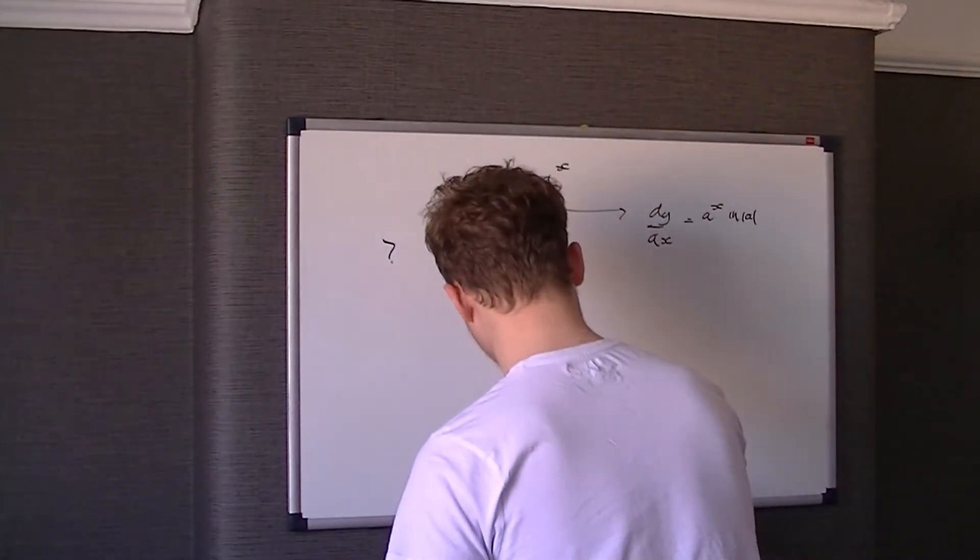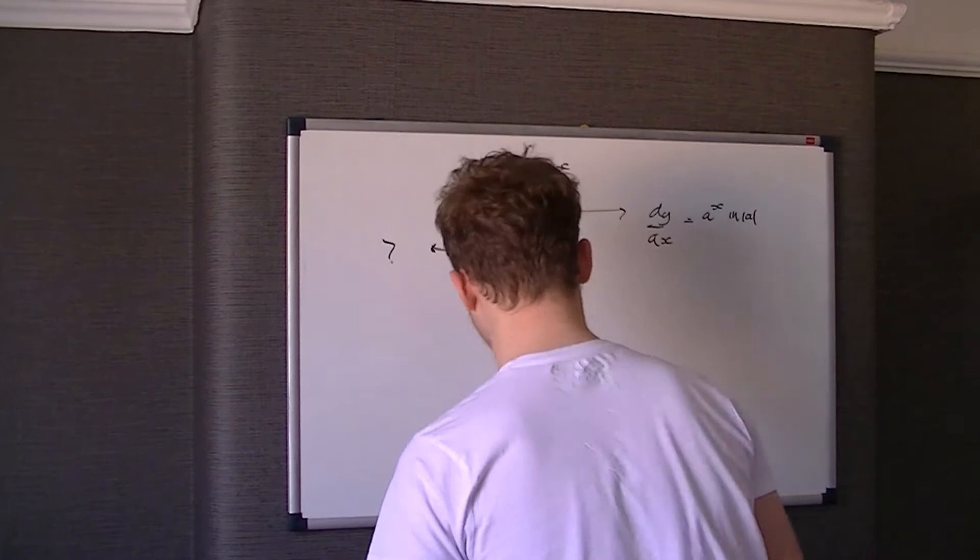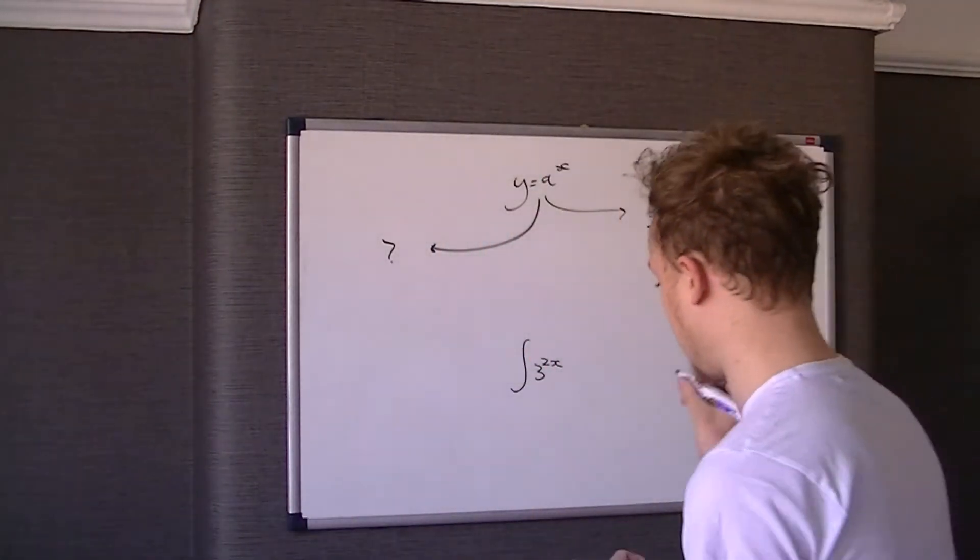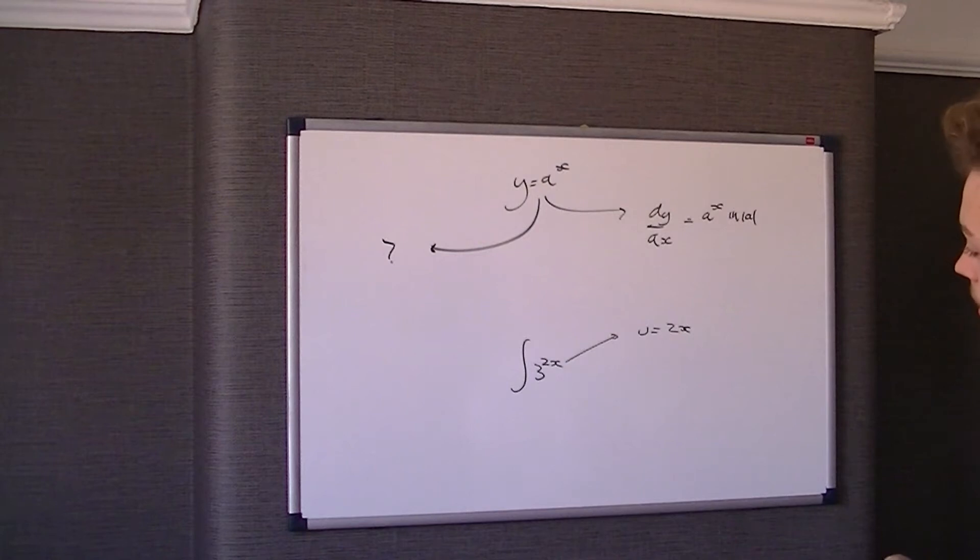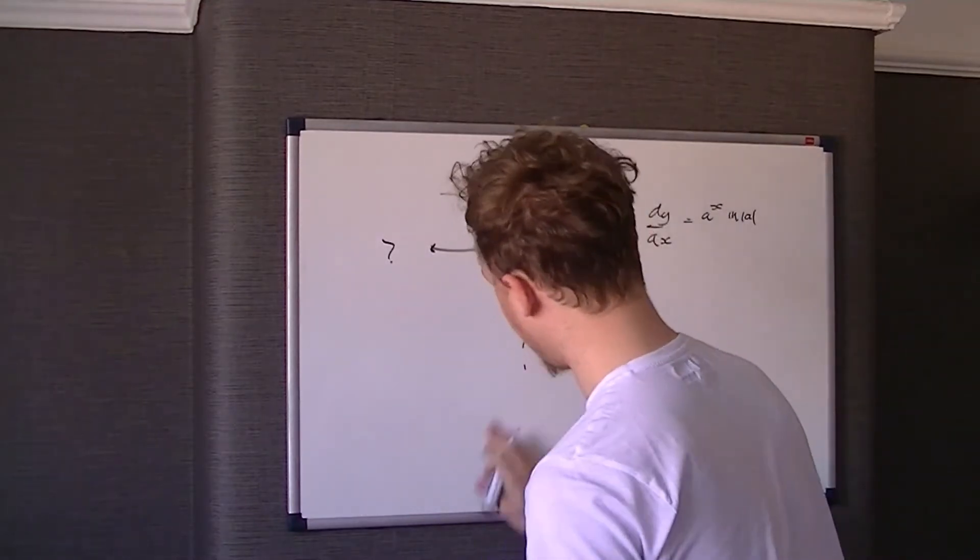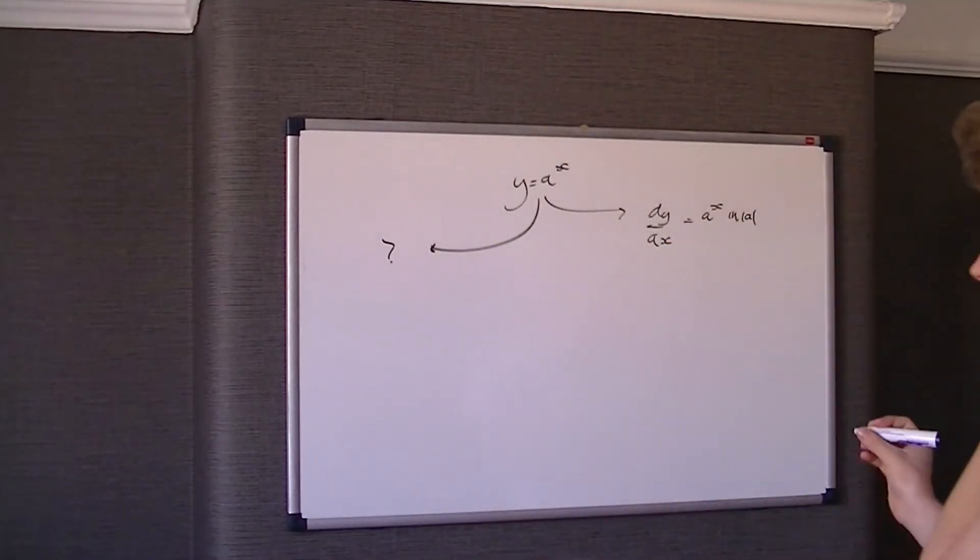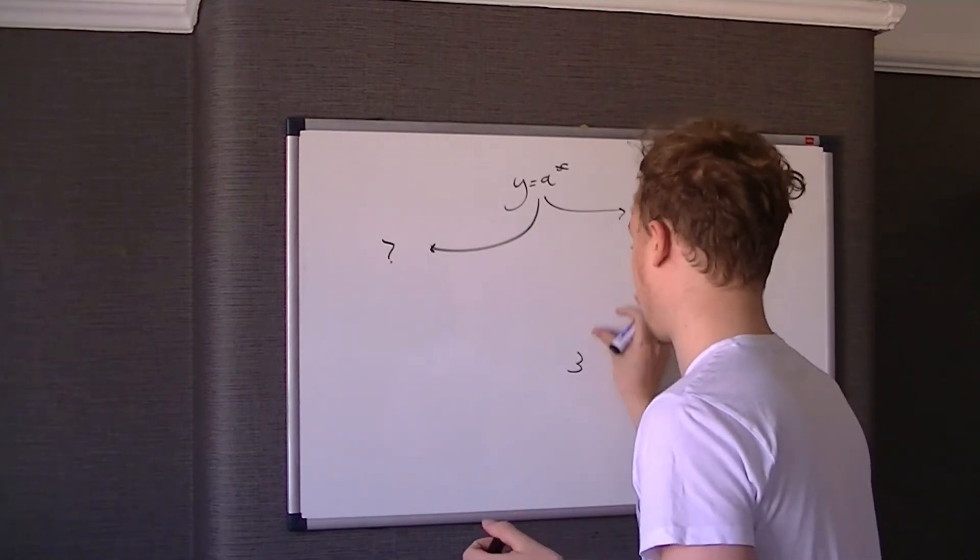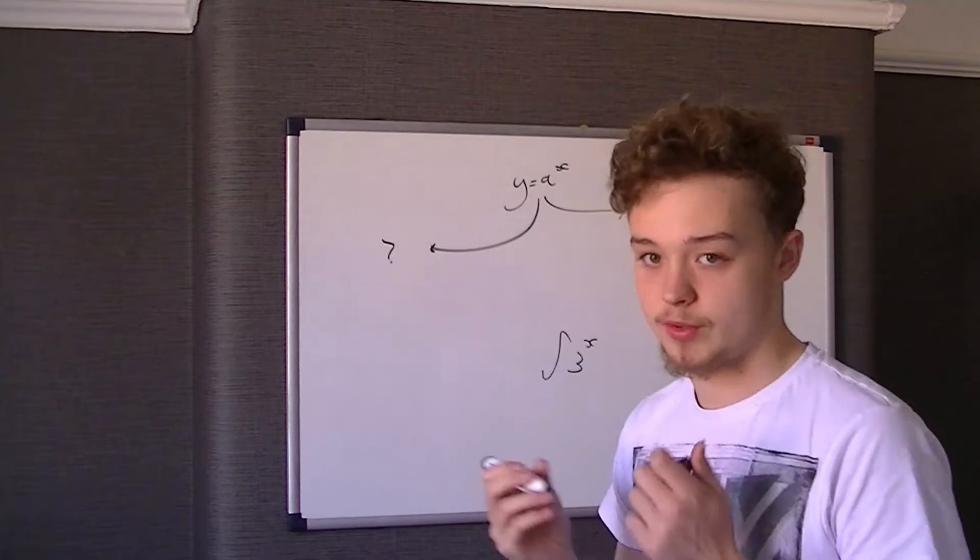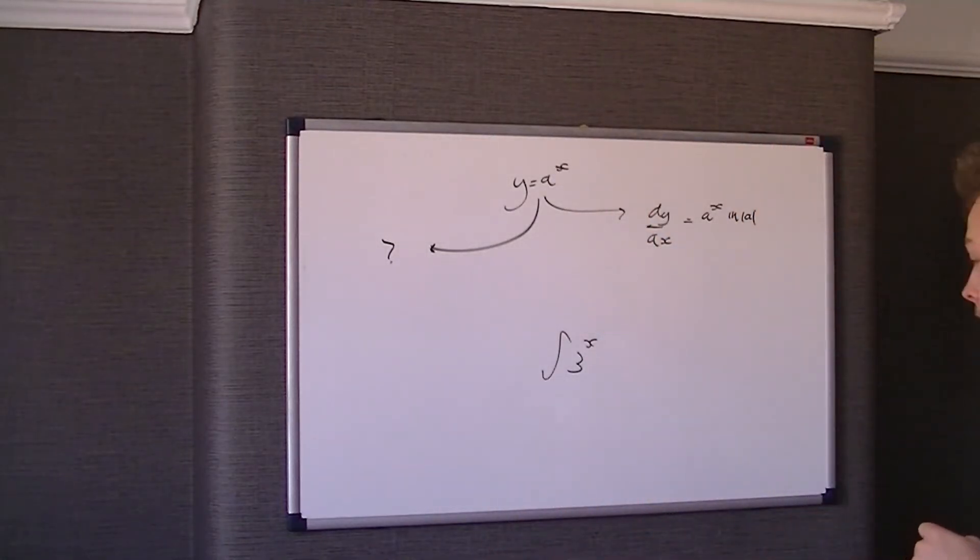So the example for this, basically after a load of working out, we have to integrate this number, which is integration of 3 to the power of 2 to the x. Actually no, forget that, sorry. That's part of the question. So basically, this is some kind of question where you have 3 to the power of x and you have to integrate that with respect to x.